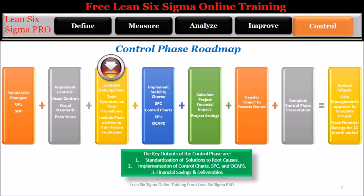Step 3: Establish training plans — train operators on new procedures. In the training plan, include how future employees will be trained and the frequency of repeat training. Step 4: Implement stability charts, statistical process control, control charts, key process indicators, and out of control action plans, OCAPs. These methods will be new to the people on the floor, so the team will need to train them in these new methods and ensure the people understand and implement these new procedures as a part of their daily work.